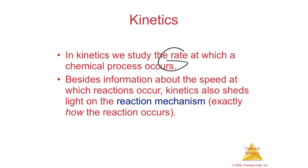So if you pour two chemicals together, it may instantaneously happen in a trillionth of a second, or it may take 10 million years for a reaction to happen. Just because two things will go together doesn't have anything to do with how fast they do it. So when you're studying the speed of a reaction, you are studying kinetics.